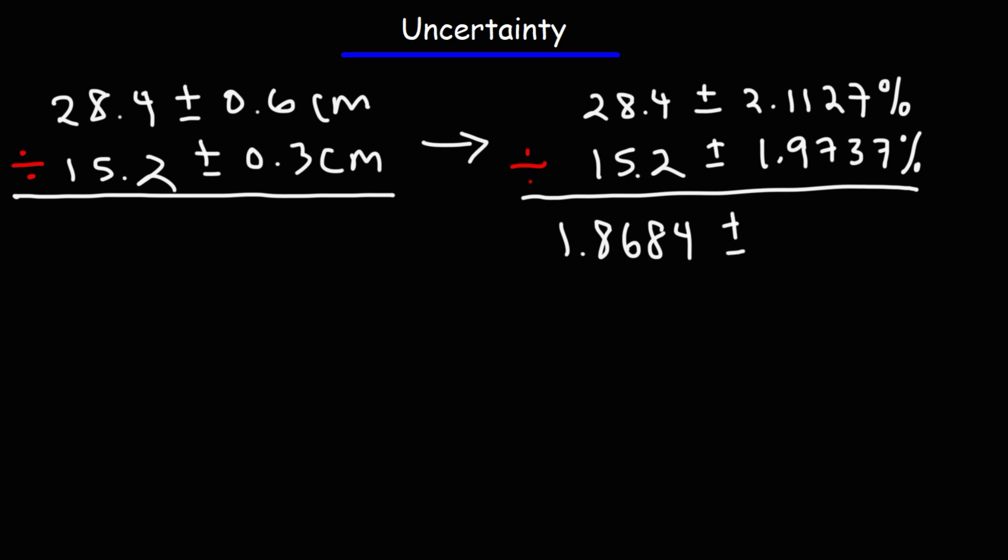So now let's add the two percentages just like we did before. So the rules for multiplication and division are the same. You need to convert the uncertainty into a percent uncertainty. And then when you perform the operation, be it multiplication or division, in both cases you need to add the percent uncertainty. 2.1127 plus 1.9737, that is going to be 4.0864%.